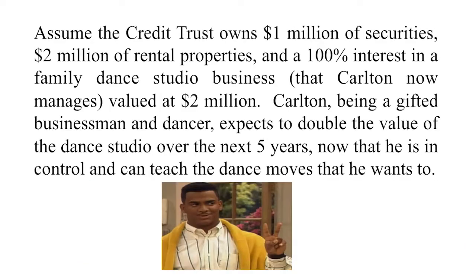Assume the credit shelter trust holds five million total in assets: one million in securities, two million in rental properties, and a two million dollar interest in a family dance studio business that Carlton now manages. Carlton, being the gifted businessman and dancer that he is, expects the value of the business to grow over the next five years now that he's in charge.